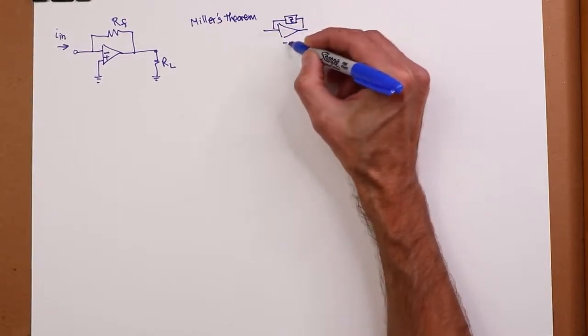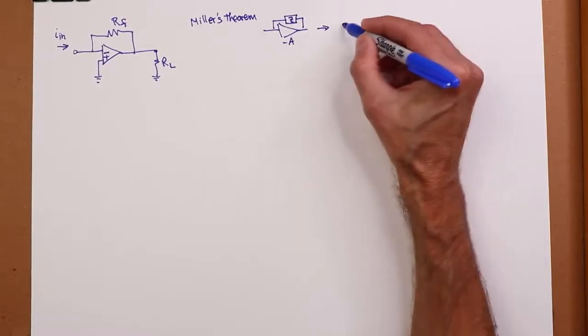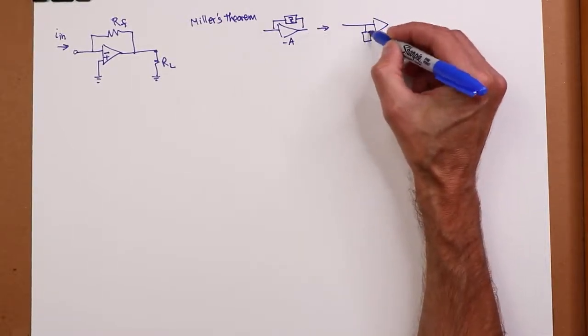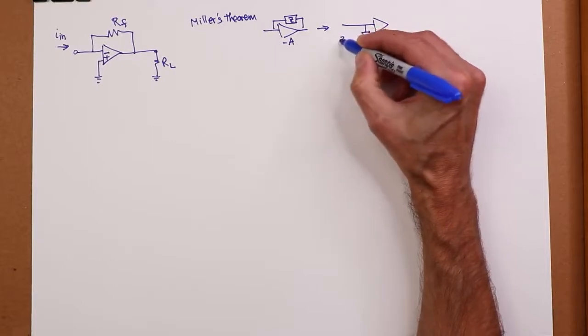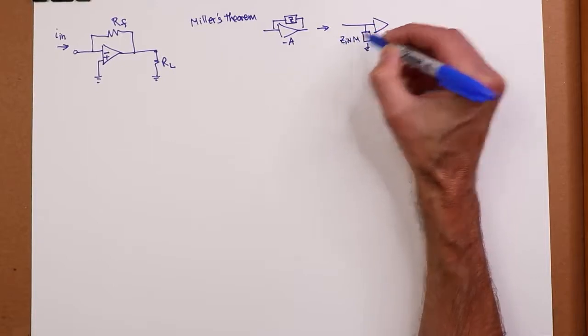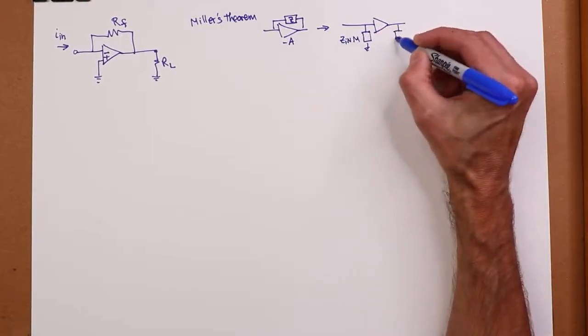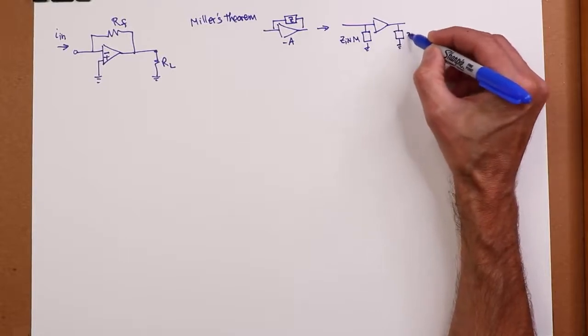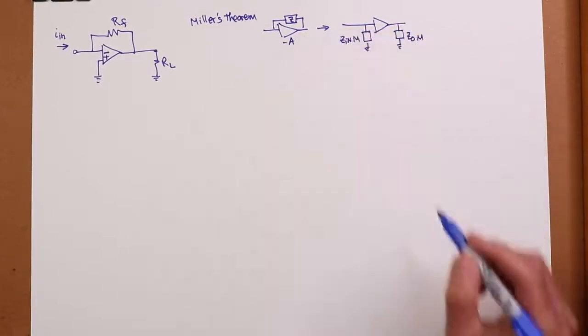Some Z. And you can transform it into a Z in Miller and a Z out Miller. And those clearly are parallel connections. Just a mathematical transform.